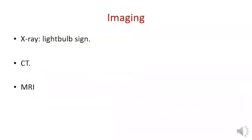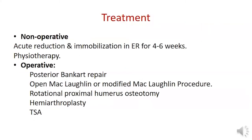The characteristic X-ray finding is a light bulb sign during acute dislocation. CT is used for bony deficiencies and MRI for soft tissue. Non-operative treatment includes acute reduction and immobilization in external rotation for four to six weeks, followed by physiotherapy.